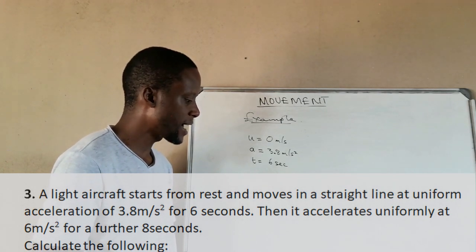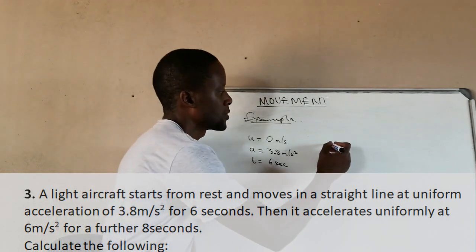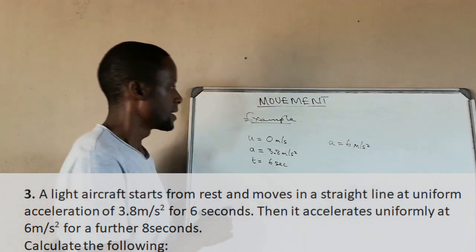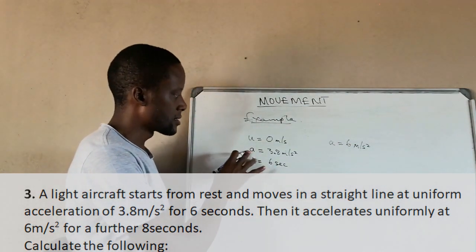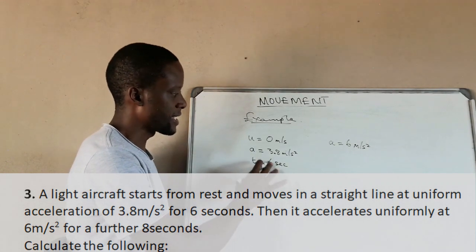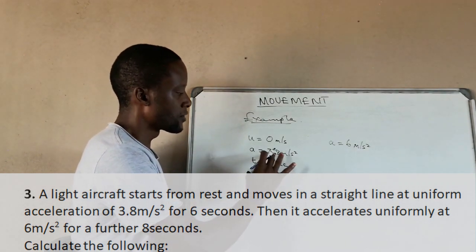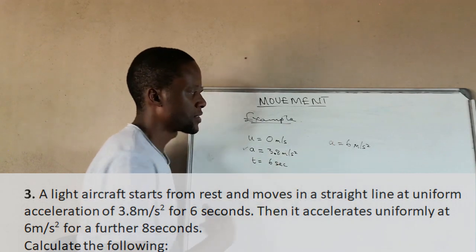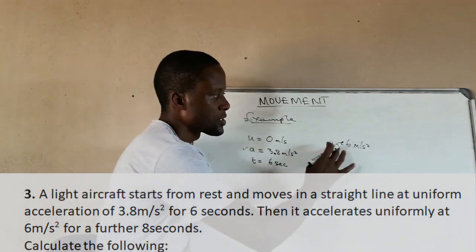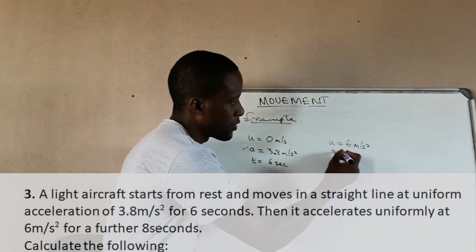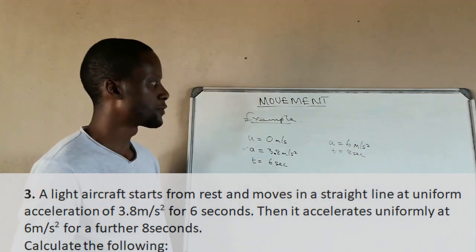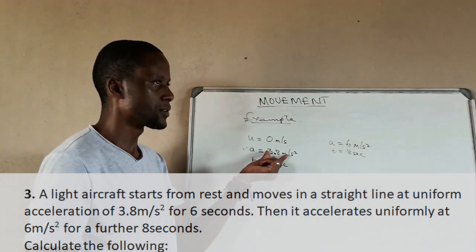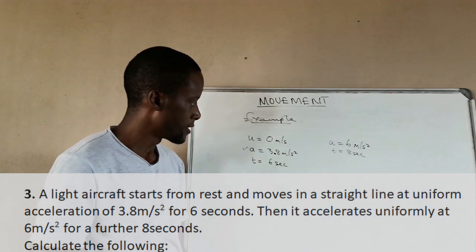With this question there are two accelerations. The first acceleration is 3.8 meters per second squared for the first six seconds. The second acceleration is six meters per second squared, and it accelerated using this second acceleration for a time of eight seconds.